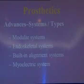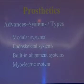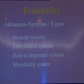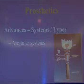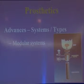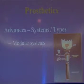Advancements are also in the different system and types. There can be a modular system, endoskeletal system, built-in alignment system, and myoelectric system. Most of this has already been covered by previous speakers. In the modular system, different parts are there — what you have to do is just make a socket and the rest of the prosthesis can be assembled easily and they are readily available in the market.